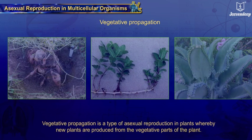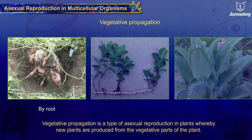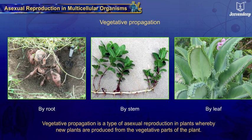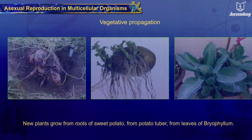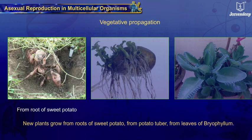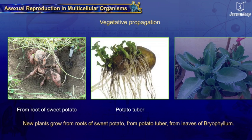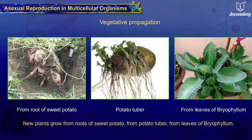Vegetative Propagation is a type of asexual reproduction in plants, whereby new plants are produced from the vegetative parts of the plant — i.e. roots, stems, or leaves — without the production of seeds. New plants grow from roots of sweet potato, from potato tuber, and from leaves of bryophyllum.